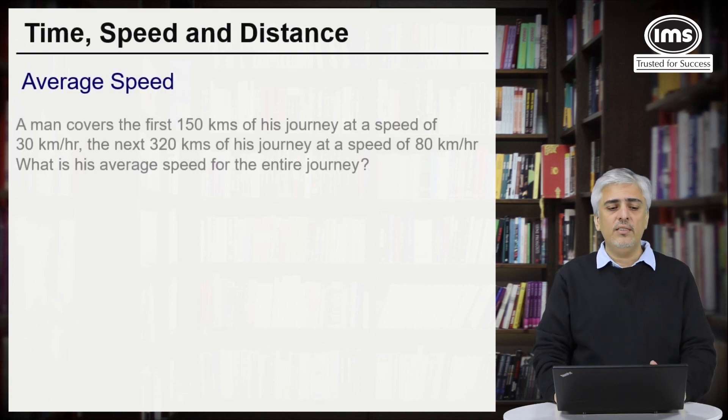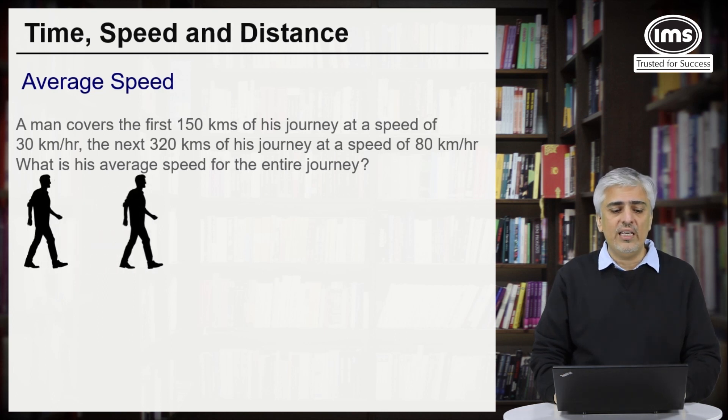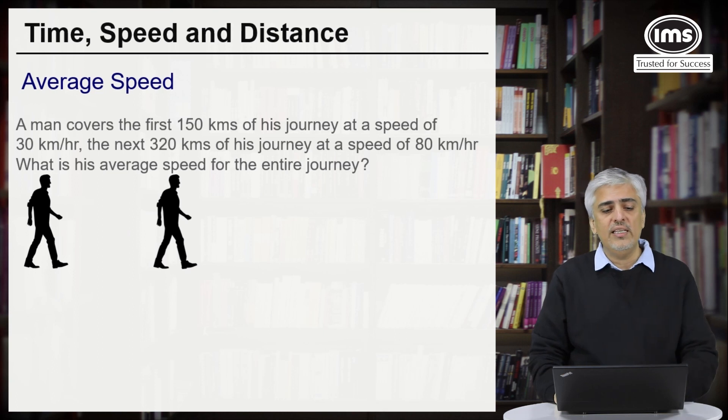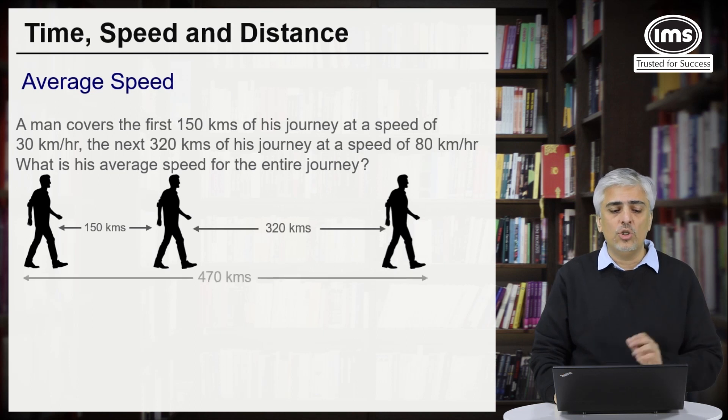The first one: a man covers the first 150 km of his journey at a speed of 30 km per hour, the next 320 km of his journey at a speed of 80 km per hour. Question asked is what is his average speed for the entire journey? So let's have a look. So this is the man, he walks from position A to B which is say 150 km, then walks from there another 320 km. So the total distance covered by him is 470 km.